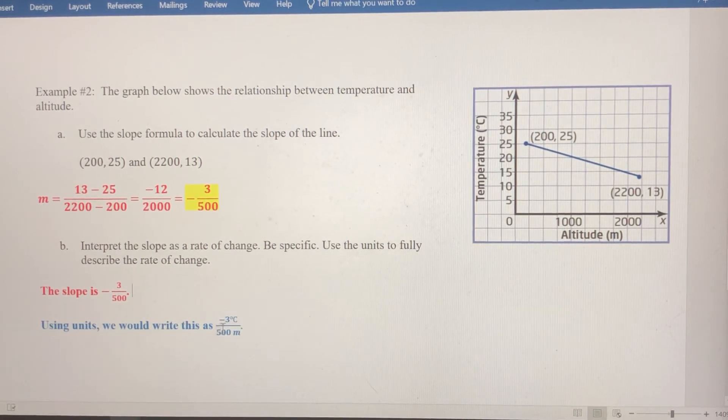we're going to write that as negative 3 degrees Celsius. Remember, the numerator is going to be whatever's on the y-axis here, and that's temperature. So that's negative 3 degrees Celsius over what's on the x-axis here, which is the altitude, and that's going to be 500 meters because that's the unit that's specified with the label here. So using units, we would write this as negative 3 degrees Celsius over 500 meters.